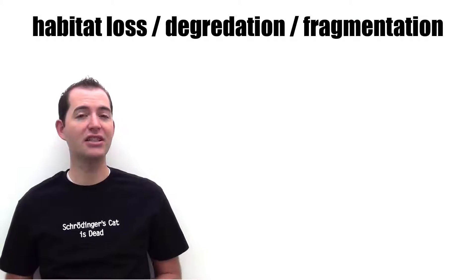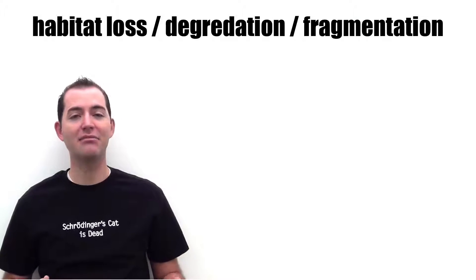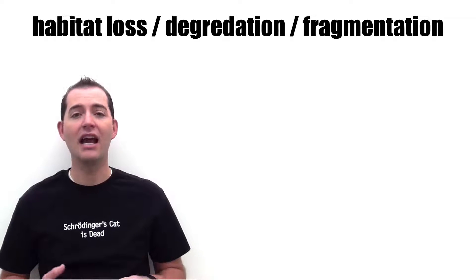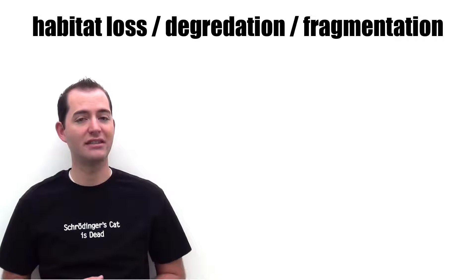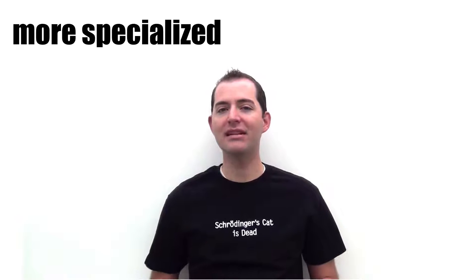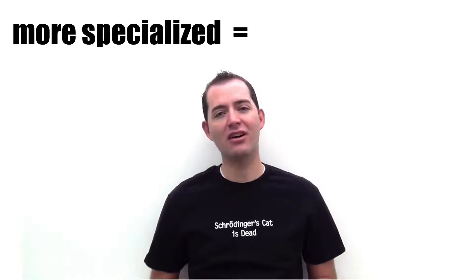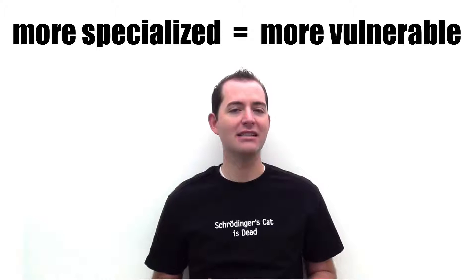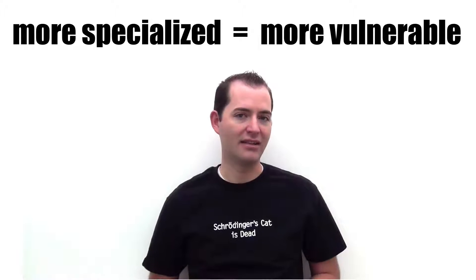Habitat loss, degradation, and fragmentation is the next major threat to biodiversity and cause of extinction. All species have food and habitat needs, and the more specialized those needs are, the more vulnerable that species is to this type of threat.